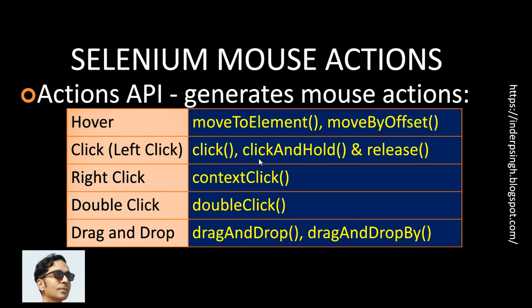There is another pair of methods: click_and_hold moves the mouse to a web element and clicks in the center of that element, then you have to call the release method to actually release the clicked button. Right click is called context click in Selenium, and you can invoke it using the context_click method. For double click in Selenium Java, you can call the double_click method.